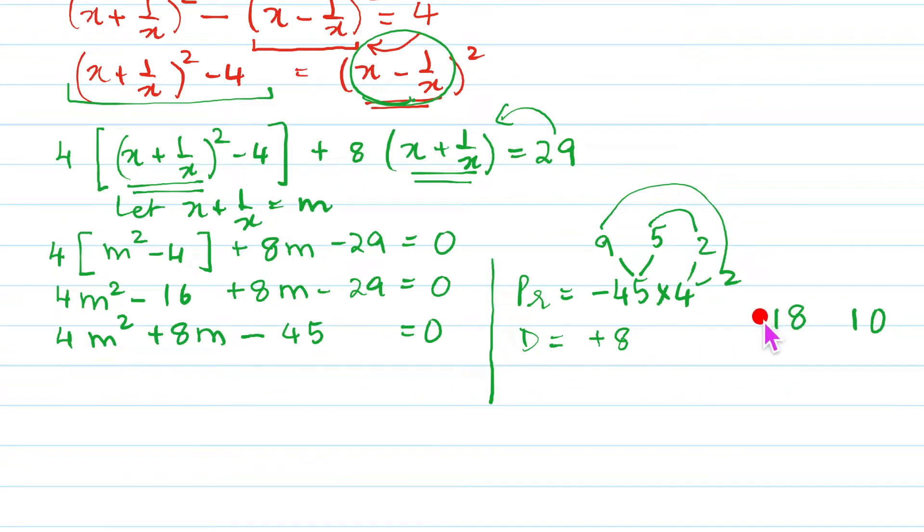So we will have the factors as 18 and 10. The difference is plus. So 18 will be having plus sign and 10 will be having minus sign. So these are going to be our factors. We are going to split the middle term like so.